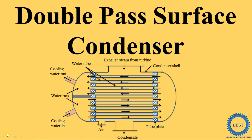In this video I explain the double pass surface condenser, which is also called the shell and tube type condenser. Surface condenser means exhaust steam coming from the turbine is not directly mixed with the cooling water. Cooling water is passed through a number of tubes and exhaust steam from the turbine is passed through the shell. That is why it is called the shell and tube type — in one shell there are a number of tubes.